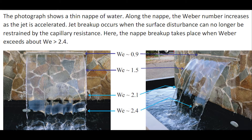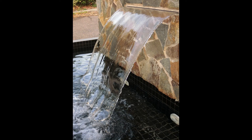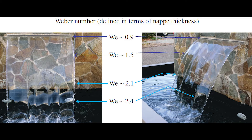The nappe breakup takes place when the Weber number exceeds about 2.4. A second photograph shows a 4 mm thick two-dimensional jet discharging into the atmosphere. The nappe thickness decreases as the jet is accelerated and the Weber number increases. Large disturbances start to appear for a Weber number of about 2.1, and ultimately breakup takes place.